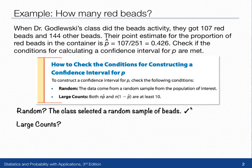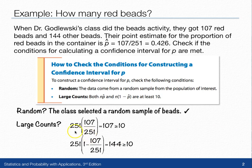And then we need to check the large counts by utilizing the p-hat value 107 over 251 and 1 minus p-hat, along with the sample size of 251. So 251 times 107 out of 251 equals 107, and that's greater than 10.